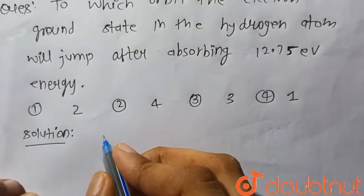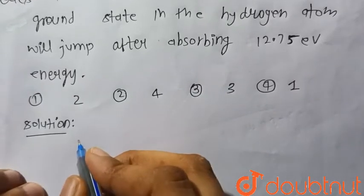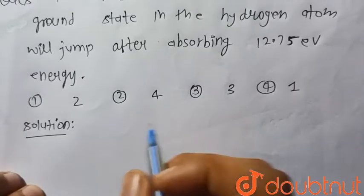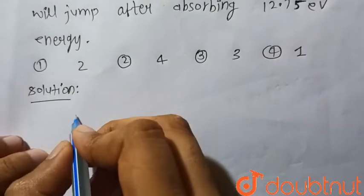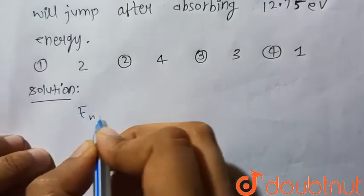We know that energy of the hydrogen atom during the electronic transition is given by En is equal to